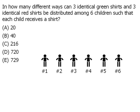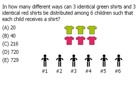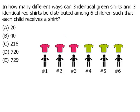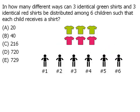We have six children and six shirts to distribute among those children. There are several ways to distribute these shirts — here are some possible distributions — and we want to come up with a systematic way to distribute them so that we can count them.